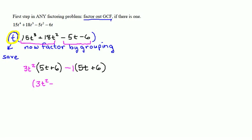3T squared minus 1 is my purple factor from the two GCFs. 5T plus 6 is my common binomial factor.